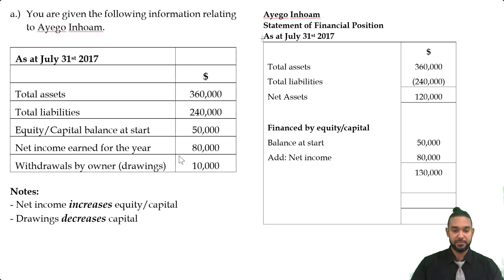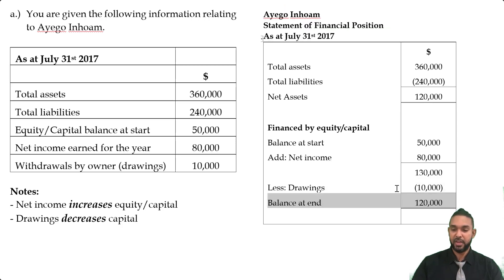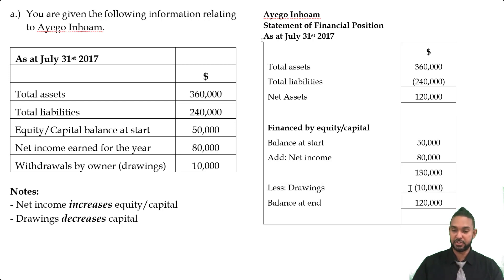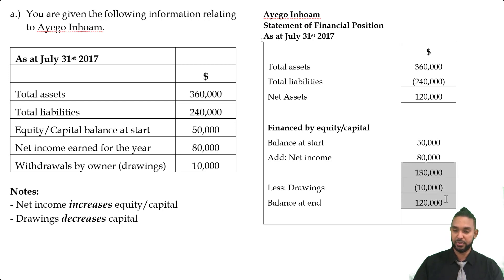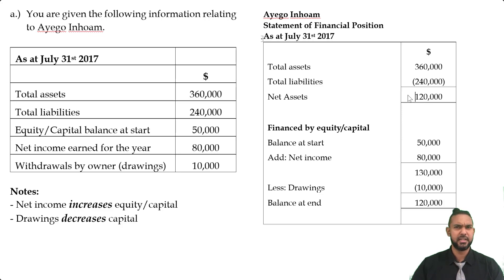What we have left is the withdrawals by owner, or drawings, and we're going to subtract that. The reason we're subtracting it is because if the owner takes out any resources, he or she is decreasing their investment in the business, and therefore decreasing capital. That's why we subtract drawings. So we're seeing 130 minus 10 is 120. I want you to note that that 120 matches the net asset figure on top, because this is the capital figure financing the remainder of the assets after extracting liabilities.